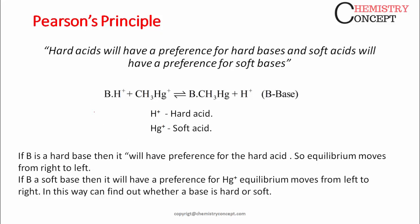Let's understand this with an example. Consider a reaction where BH⁺ reacts with CH₃Hg⁺ to form B·CH₃Hg and H⁺. Here, B does not denote an element — B denotes a base. Now, in this reaction there are two acids: H⁺ is a hard acid, and Hg⁺ is a soft acid. On the reactant side, the base is with H⁺, which is a hard acid. On the product side, the base is with Hg⁺, which is a soft acid.